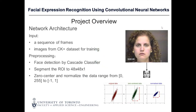I use images from the CK+ dataset for training the convolutional neural network models. For achieving better performance, I modify the dataset for 7-emotion recognition to achieve a balance in the number of images across all 7 emotion classes.